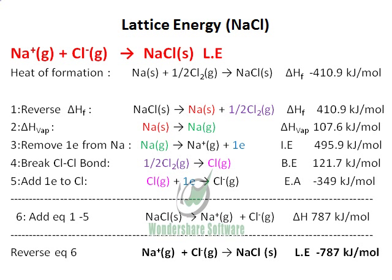The points to note are: all the energies in equations 1 to 5 are positive, and only the electron affinity energy is negative. But the final lattice energy, because it is the energy released for sodium chloride, will be a negative value. Basically, you need the heat of formation, heat of vaporization, ionization energy, bond energy, and electron affinity to calculate lattice energy.